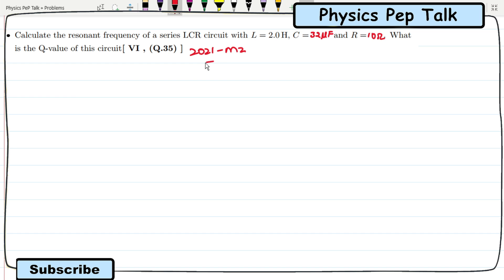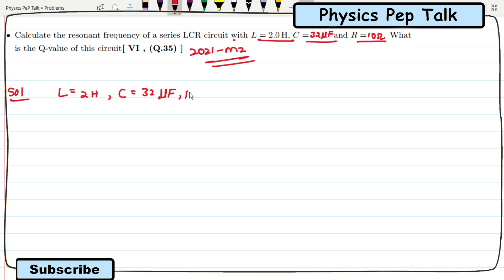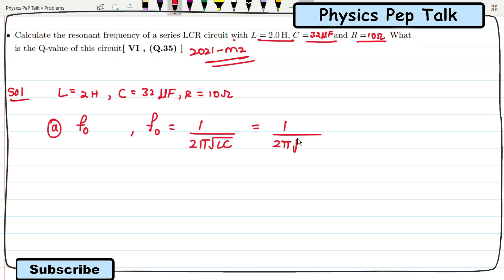Next problem from 2021 Model Paper 2: calculate the resonant frequency of a series LCR circuit with L equal to 2 henry, C equal to 32 microfarad, and R equal to 10 ohms. What is the Q value of this circuit? Given L is 2 henry, C is 32 microfarad, R is 10 ohms. Resonant frequency F0 is 1 by 2 pi root LC, which is 1 by 2 pi root of 2 into 32 into 10 power minus 6. F0 is found to be 19.89 hertz.